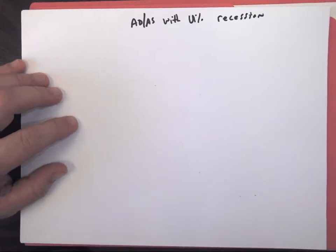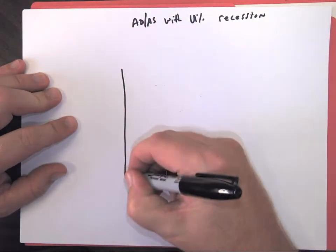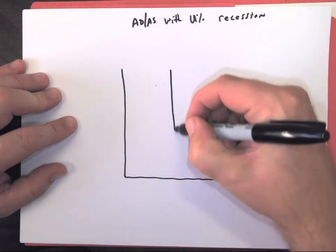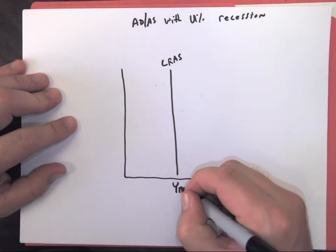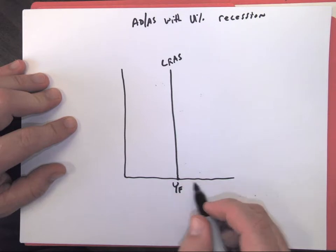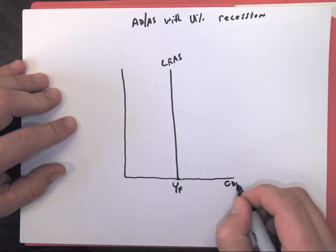So in a recession, we're not making all the GDP we could. So the way we set up a recession, we'll have our long-run aggregate supply and our point of GDP production at full employment.